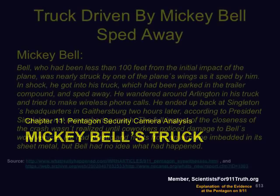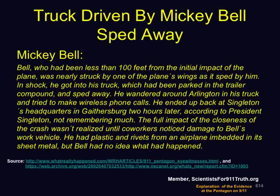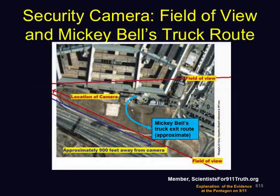Mickey Bell's truck. Mickey Bell was less than 100 feet from the initial impact and was nearly struck by one of the plane's wings. In shock, he got into his truck, which had been parked in the trailer compound, and sped away. It wasn't until later that he even realized what had happened. His truck moving across the field gives us the ability to verify the timing difference between the cameras and get an independent estimate of the speed of the plane. Here is Mickey Bell's route for his quick exit.